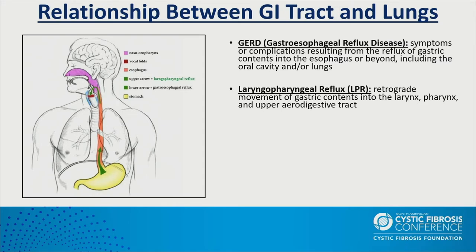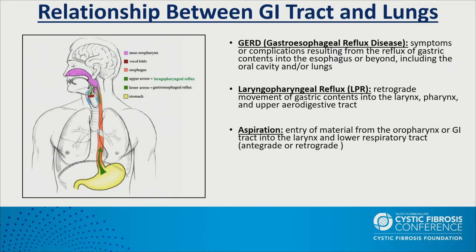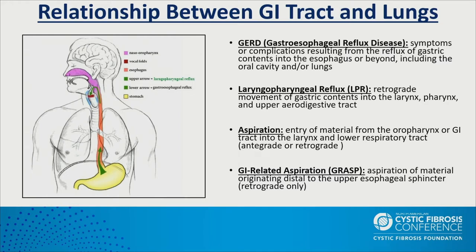You'll also hear the term LPR — laryngopharyngeal reflux — where reflux breaches the upper esophageal sphincter into the throat but does not necessarily enter the lower respiratory tract. Aspiration is when material passes the vocal cords and enters the lower respiratory tract. We've coined a new term through a CF Foundation working group: GRASP, or GI-related aspiration — where material comes up from the GI tract and enters the airway, either antegrade during swallowing or retrograde from below.